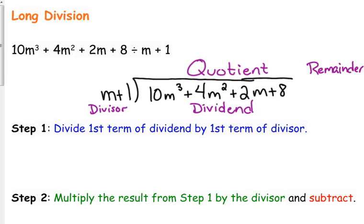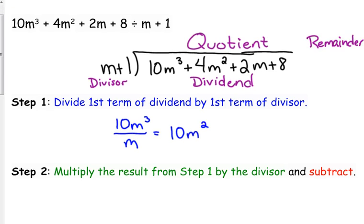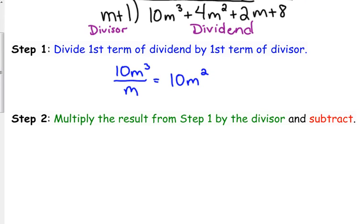Step one is that we divide the first term of the dividend, so in this case we divide 10m³ by the first term of the divisor. You may want to do this off to the side from the problem. So we get 10m² is the result there. That's just using properties of exponents.